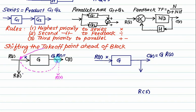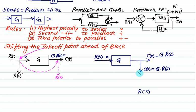What is the original value? G into R of S. What is the new value? G into R of S. So that has not changed. So this is C of S. What is this value? This value is G into R of S. My original takeoff point has a value equal to R of S. Right now I have a signal equal to G into R of S. So what we do here is we introduce one block equal to 1/G. Now if you multiply this with 1/G, will you get R of S?